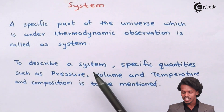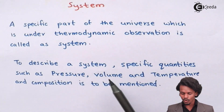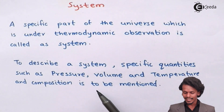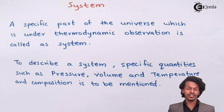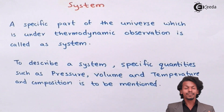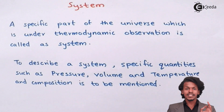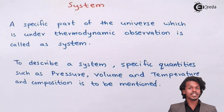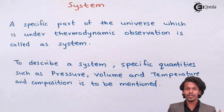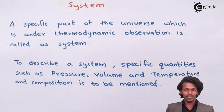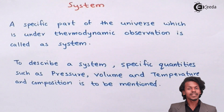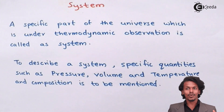To describe a system, specific quantities such as pressure, volume, temperature, and composition must be mentioned. So if I am considering a particular system, I have to specify what is the temperature of that system, what would be the pressure, and what would be the volume of that particular system.